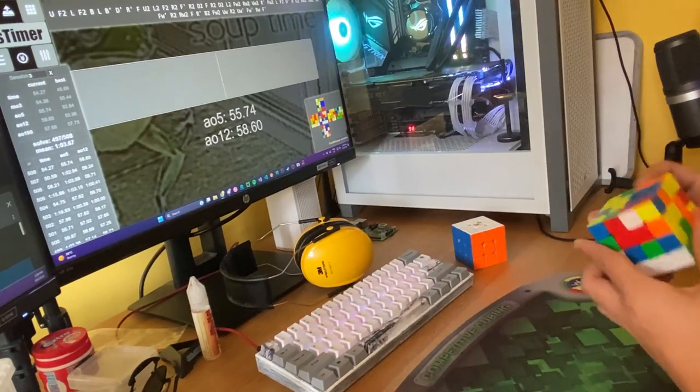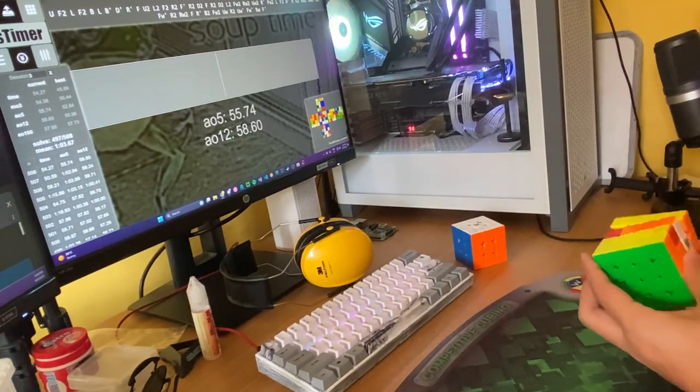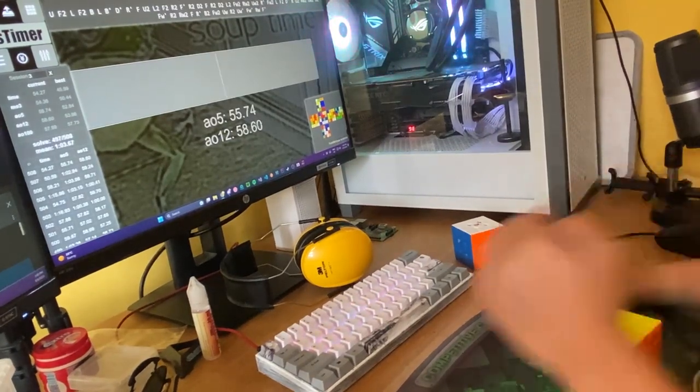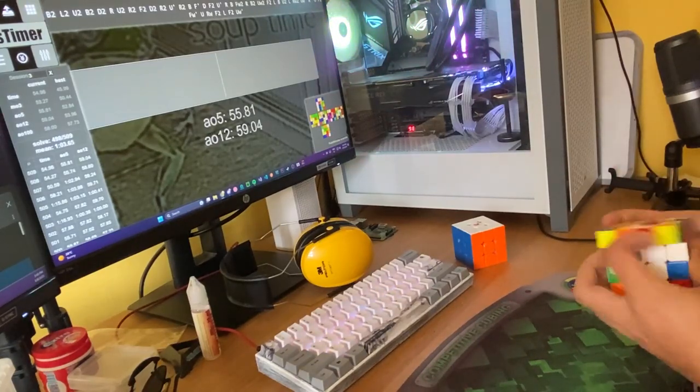So here are some solves with the Aosu WRM 4x4. Right out of the box, I can instantly say that it is way better than my old main, the MGC 4x4. I've got my first ever sub 1 minute average, and my first sub 50 single with this cube.